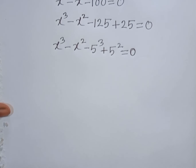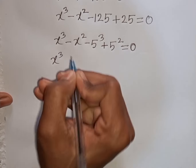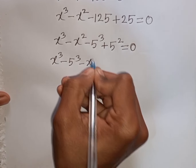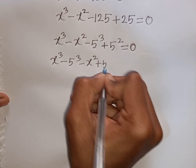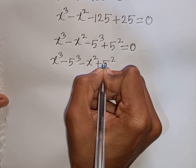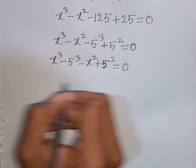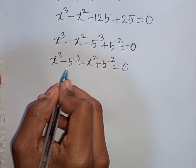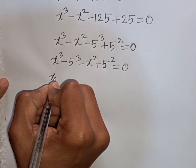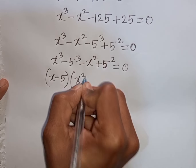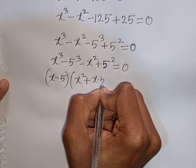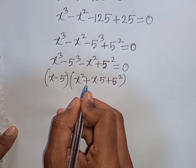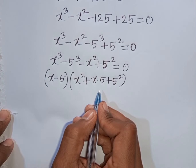Now we can write x cube minus 5 cube, then minus x square plus 5 square, then is equal to 0. Here I can apply the formula of a cube minus b cube, where a is x and b is 5. So according to the formula I can write: x minus 5 times x square plus x times 5 plus 5 square. That means a minus b times a square plus ab plus b square — this is the formula of a cube minus b cube.